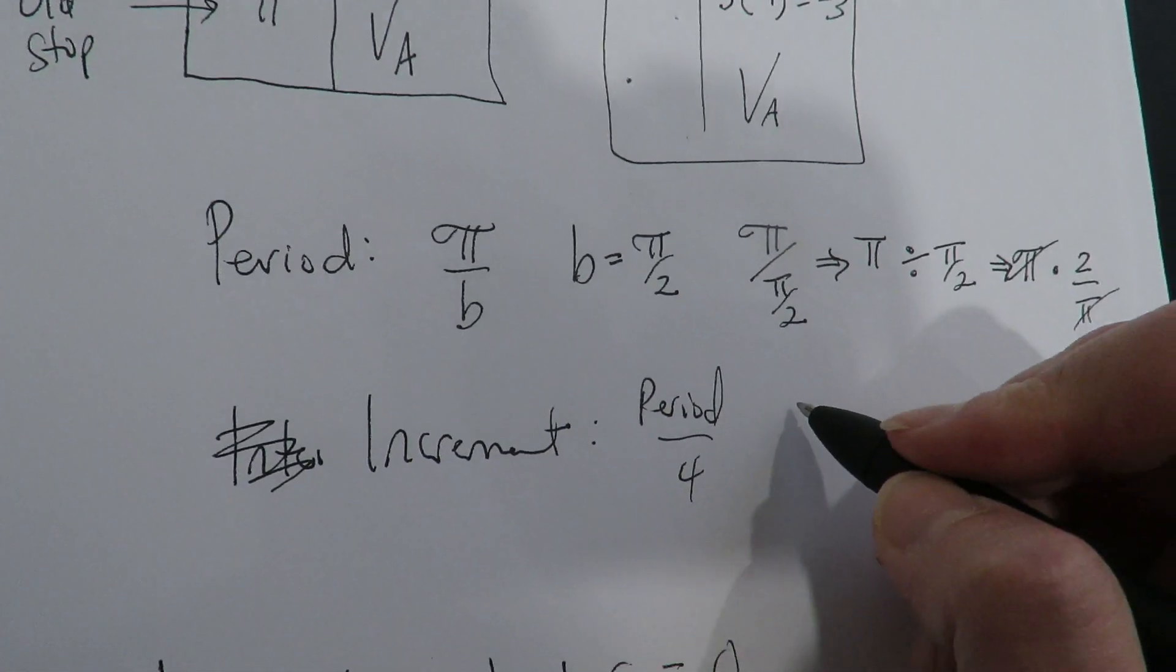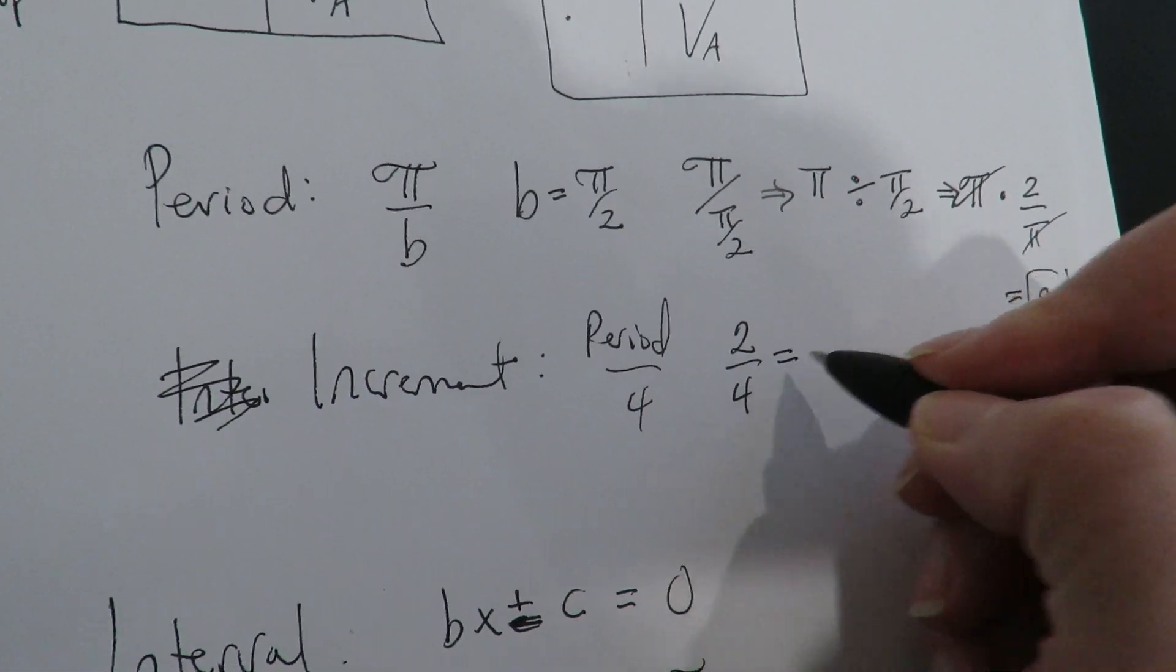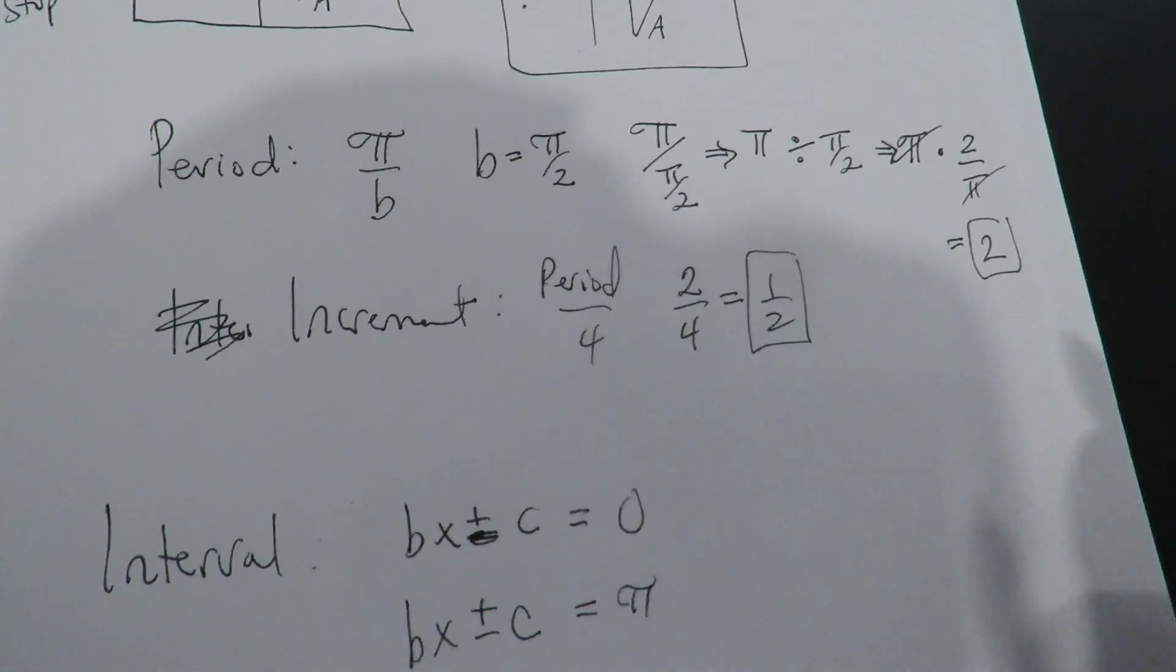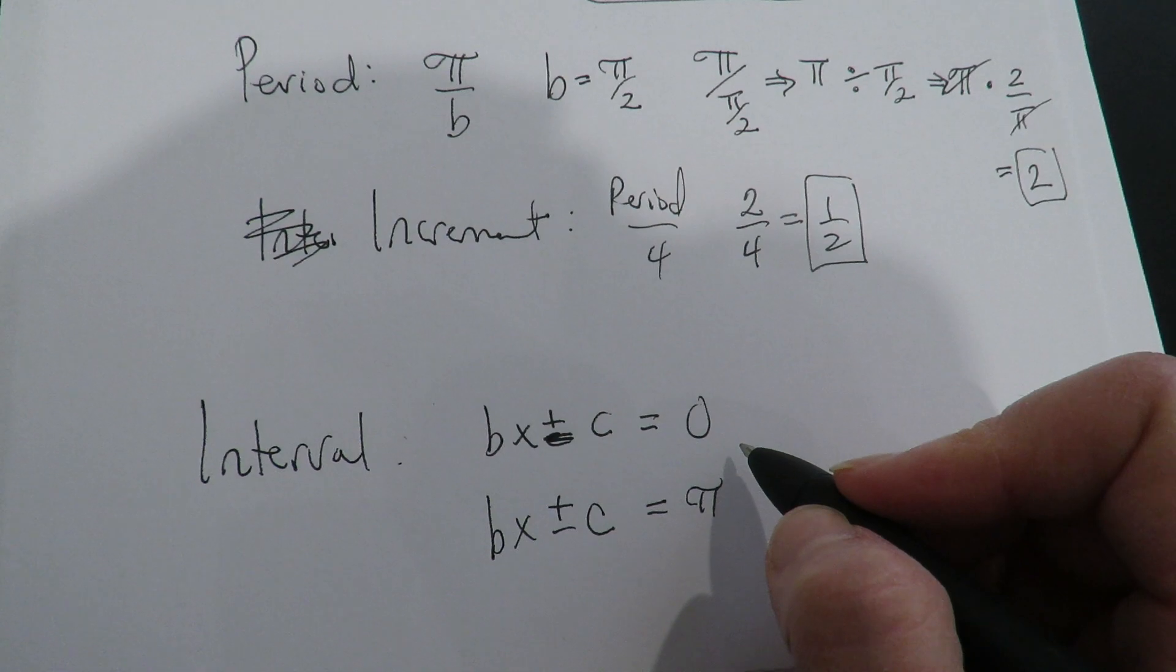The period - so now we take the period which is 2, we're going to divide it by 4. This reduces to be a half. So that is the width between the jumps. And now I'm going to find the start value.